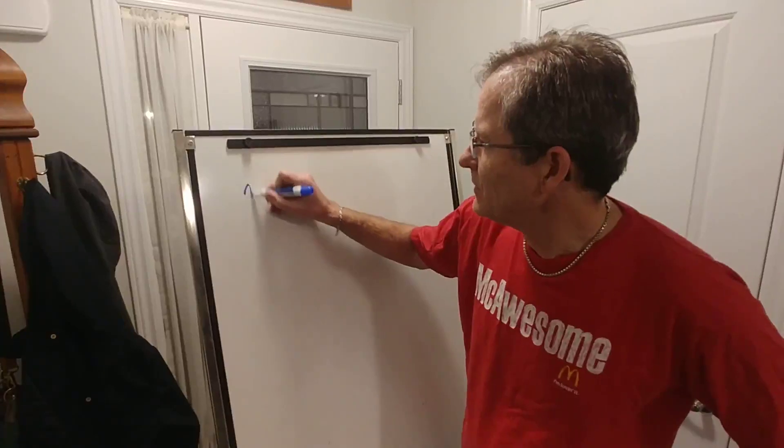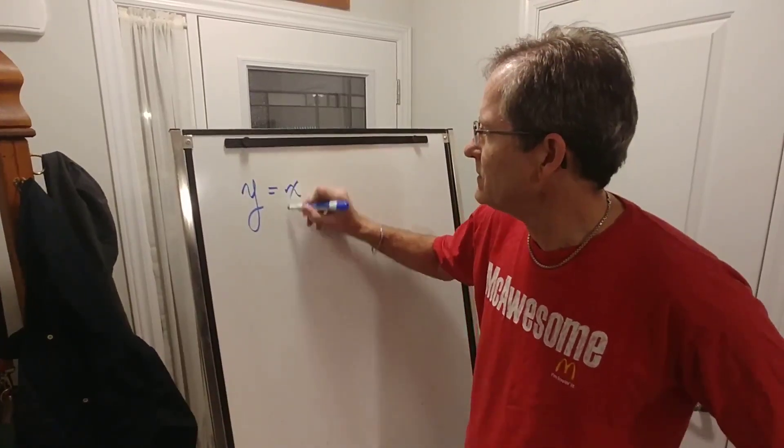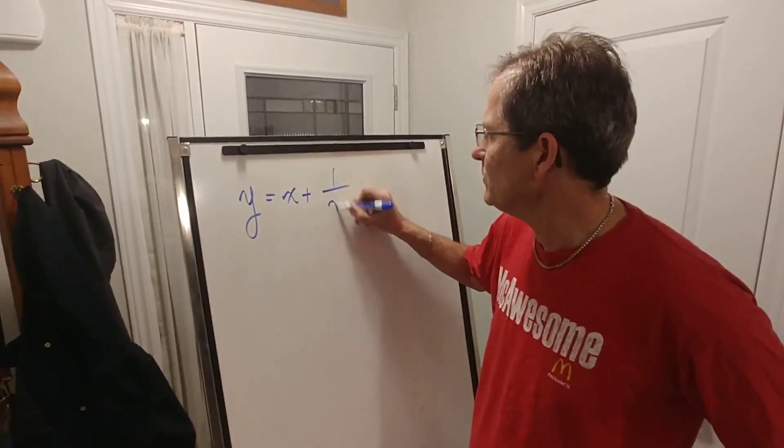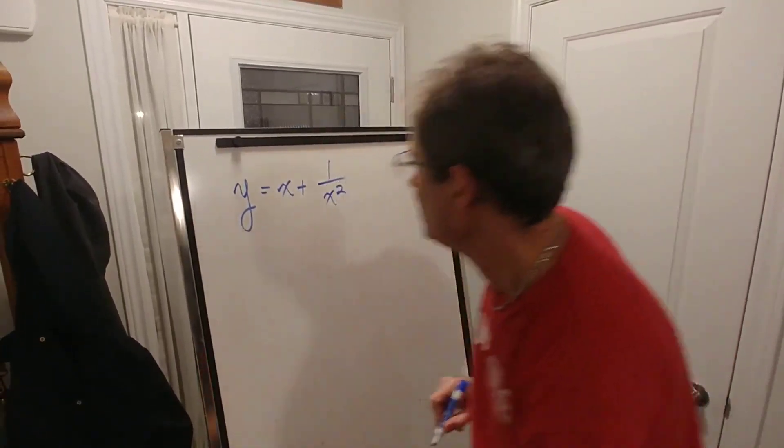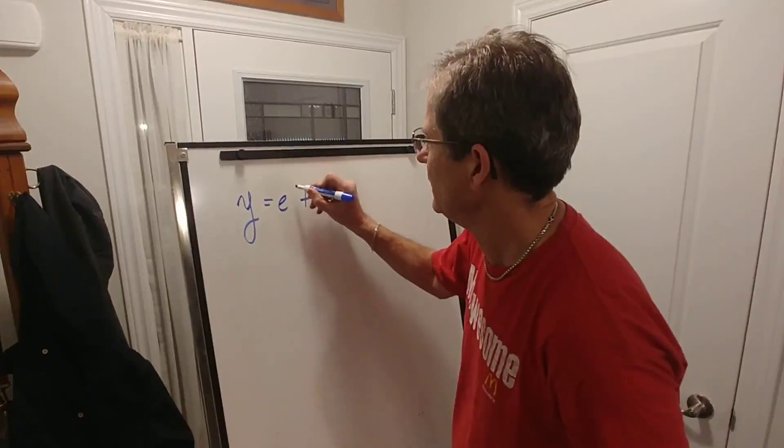In the last video we looked at the function y equals x plus 1 over x squared. Today I want to make it a little bit more complicated and change the x to e to the x.